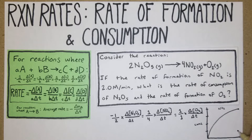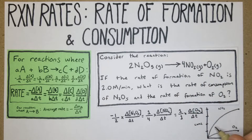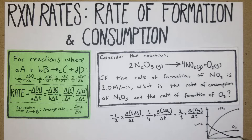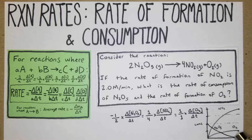For O₂ we have just one mole, so it follows a similar but lower rising curve, also starting from zero as a product. For the reactant N₂O₅ we have two moles, so it starts higher and decreases to zero by the end of the reaction. If a species starts at zero it's a product; if it starts at a nonzero value it's a reactant, and you use those curves to derive the mole ratios.